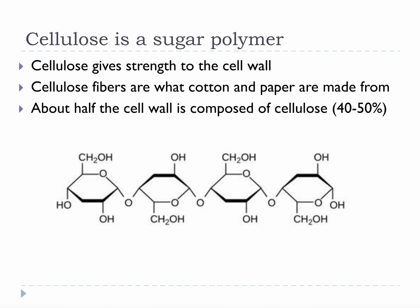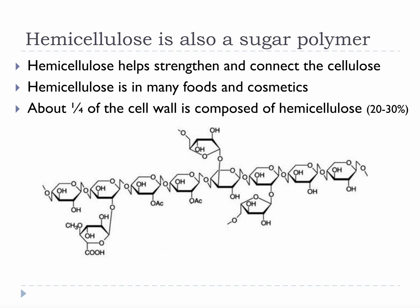Cellulose is a sugar polymer that gives strength to the cell wall. Cellulose fibers are what cotton and paper are made from, and about half of the cell wall is composed of cellulose. Hemicellulose is also a sugar polymer that helps strengthen and connect the cellulose fibers to one another. Hemicellulose is found in many foods and cosmetics, and about a quarter of the cell wall is composed of hemicellulose. Notice how hemicellulose has branches and slightly different functional groups than cellulose — it is very similar to cellulose in many respects but extremely different in others. For example, hemicellulose is far more reactive and more mobile than cellulose.